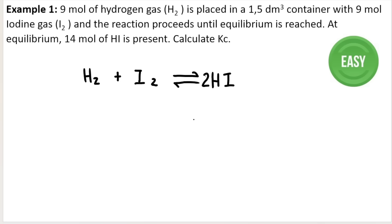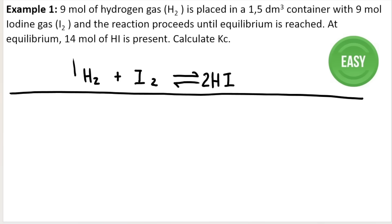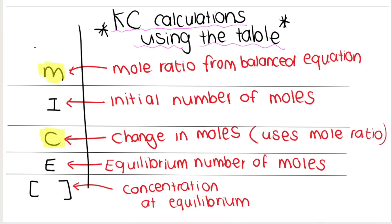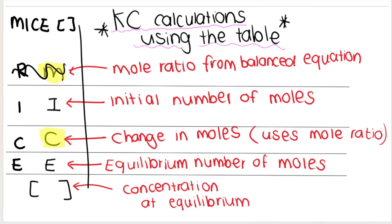After my balanced equation, I draw my table first. I call the table the MICE cube table — the 'cube' because of the square brackets for concentration. Each of my letters stand for something different. You might call it the RICE table, or maybe your teacher calls it the ICE table. Whatever you use, it's probably the same as mine — I just use slightly different names for it.